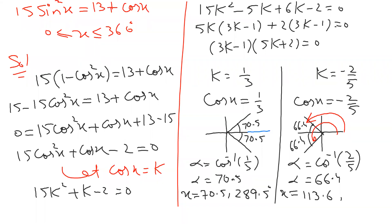For the negative cosine part — from x-axis till the line — it is 180 minus, and the second angle is 180 plus. So 180 minus 66.4 gives 113.6 degrees, and 180 plus 66.4 gives 246.4 degrees. Mabrook — I'm sure you understand. Please take a picture and then I will go for the next step, inshallah.